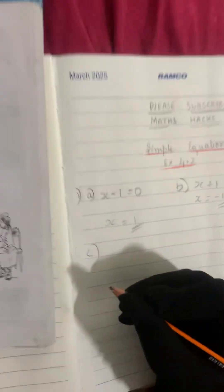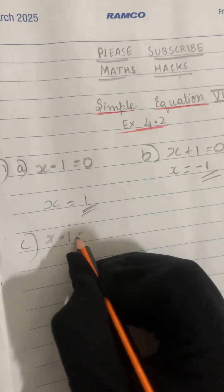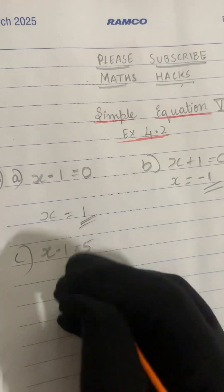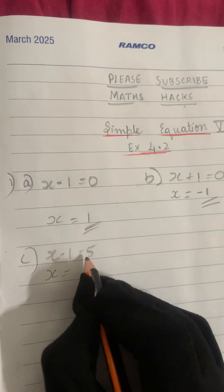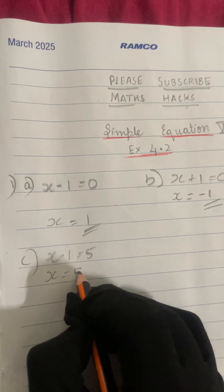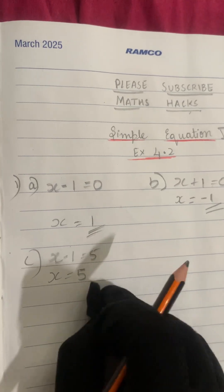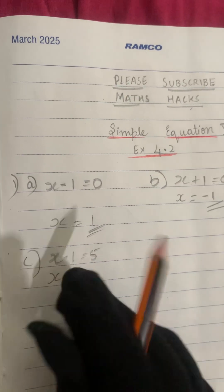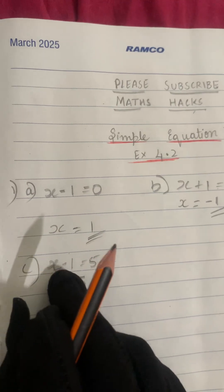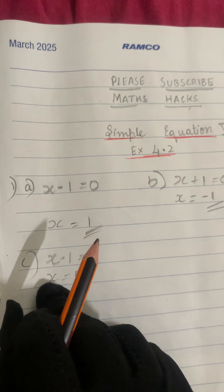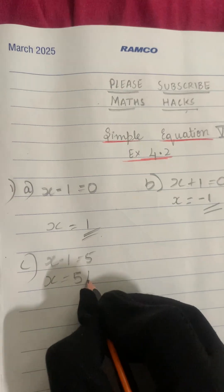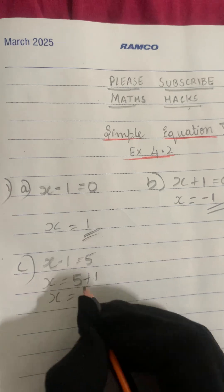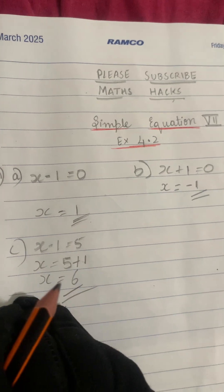Now let's solve the C question. The question is x minus 1 equals 5. This is the variable side, so let's copy x here. In the previous sums we got 0, but here we have 5 on the right-hand side — that is the numbers side. x is our variable; minus 1 is a number. We keep x in place and shift minus 1 to the numbers side — it becomes plus 1. So x equals 5 plus 1, which is 6. So x equals 6.